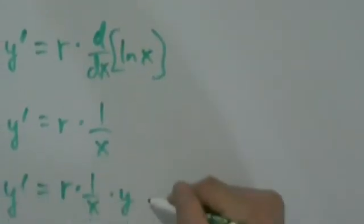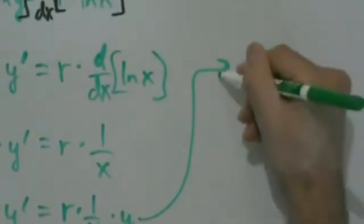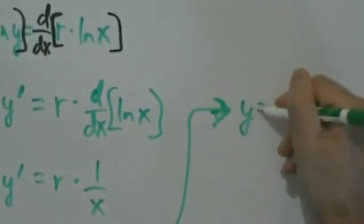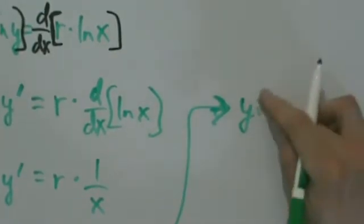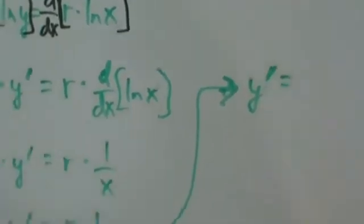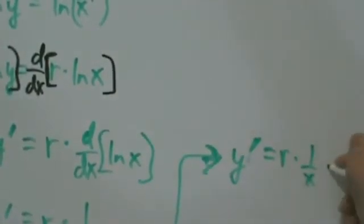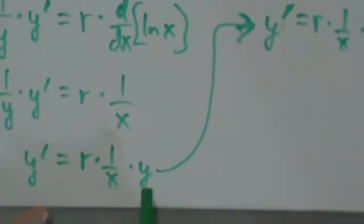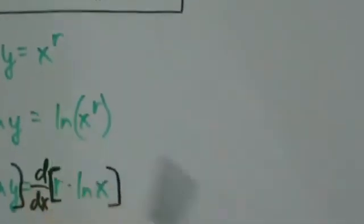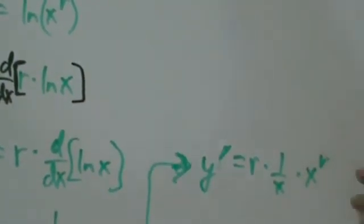So here we can replace y with x to the r. So let's go over here, come up here, and we'll say okay, y equals—or sorry, y prime, rather—y prime equals r times 1 over x times y, but remember y is x to the r, so times x to the r.